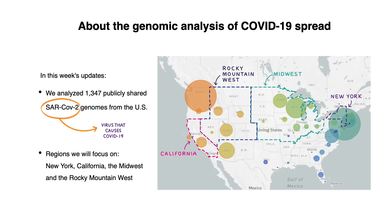In today's report, we will focus on cases in the United States. So far, we have analyzed 1,347 publicly shared SARS-CoV-2 genomes. By comparing these viral genomes to each other, we can characterize how COVID-19 is moving around the world and spreading locally.